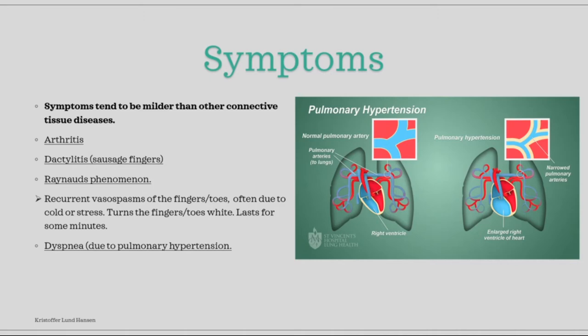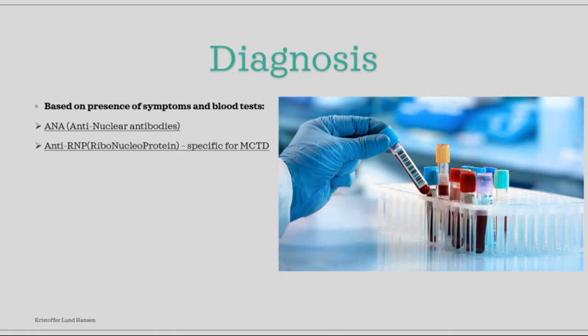To diagnose the disease, the patient first has to show symptoms. Afterwards, a few specific blood tests can be performed. ANA is quite useful as it is usually positive in systemic autoimmune diseases — it is not specific for MCTD, but if positive it highly indicates some form of systemic autoimmune disease. Then we have anti-RNP, sometimes called anti-U1-RNP, which is specific for MCTD. A positive test together with symptoms can diagnose the disease.